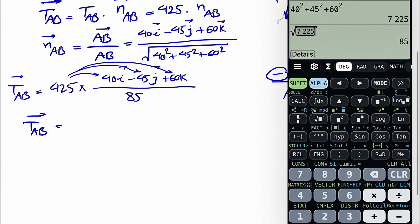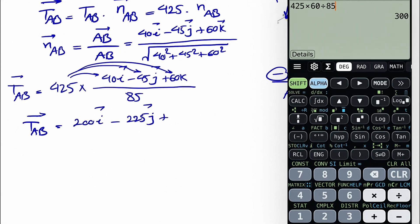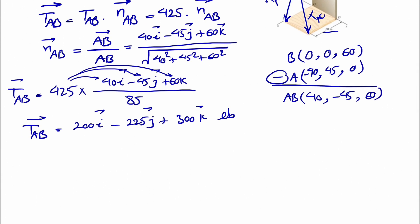Multiplying through each component: 425 × 40 / 85 = 200i, 425 × 45 / 85 = 225, so minus 225j, and 425 × 60 / 85 = 300k. So TAB = 200i − 225j + 300k pounds. That completes the first part where we needed to find TAB.